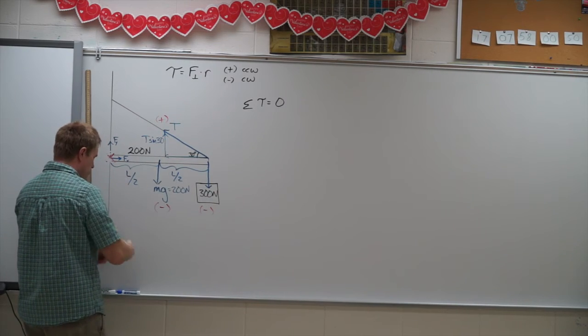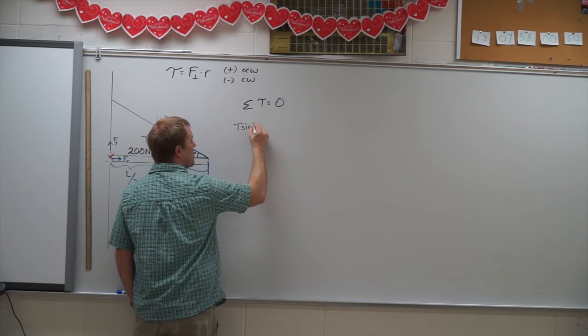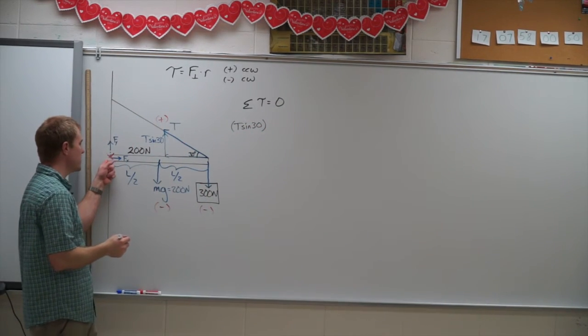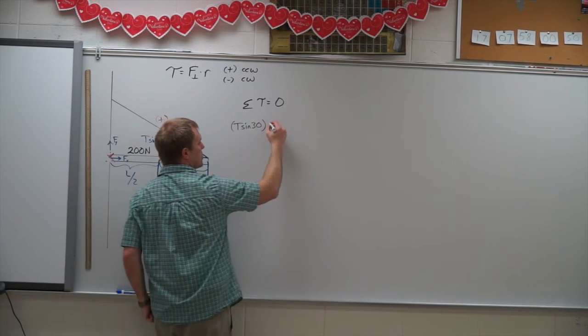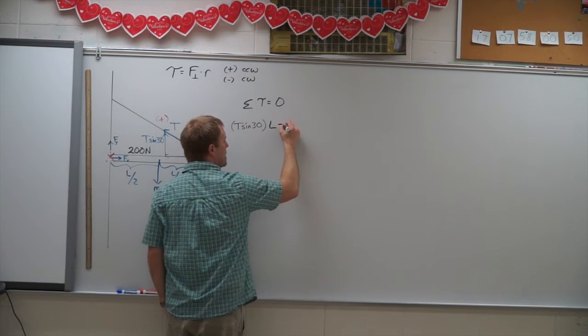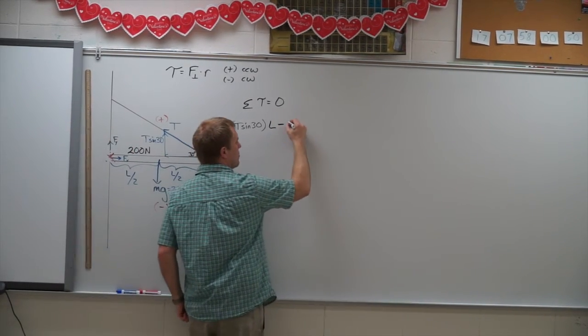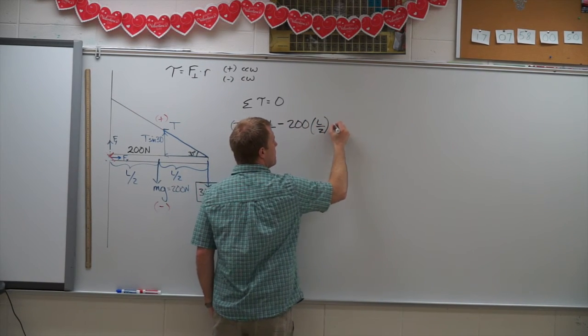So we start to write these out. So the tension is going to be T sine 30. It's positive times how far it is from my axis of rotation. So it's located the whole length of the rod. So L minus, because it's a negative torque, my 200 Newtons times its distance away, which is L over 2.